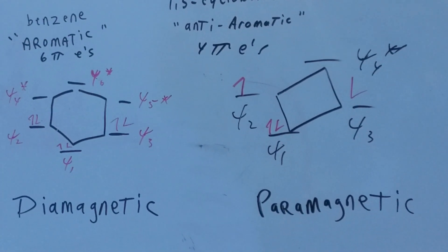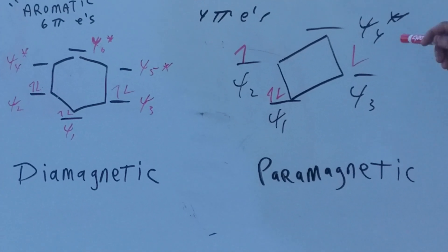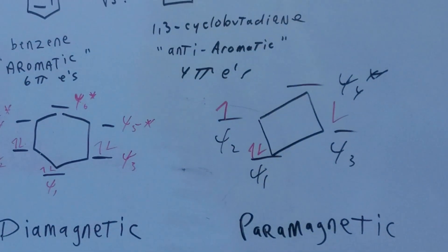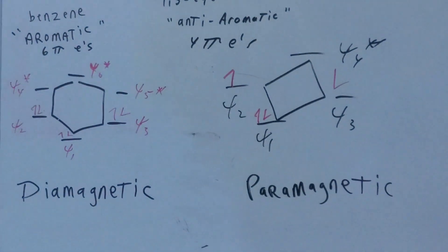And you can see those orbitals have unpaired electrons. Because they're unpaired, it's going to be slightly magnetic, and therefore paramagnetic.